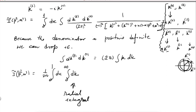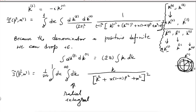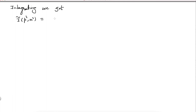Performing the radial integral ∫₀^∞ K dK/[K² + Δ]² yields 1/(2Δ). Carrying out the angular and radial integrations gives the final result for Ĩ as a function of P̂² and M².